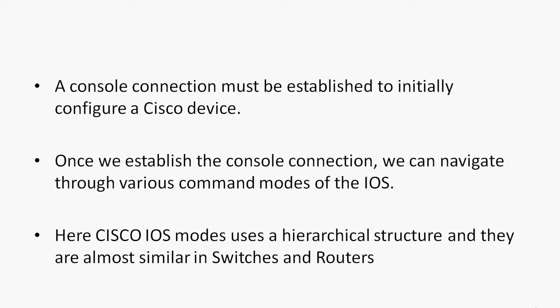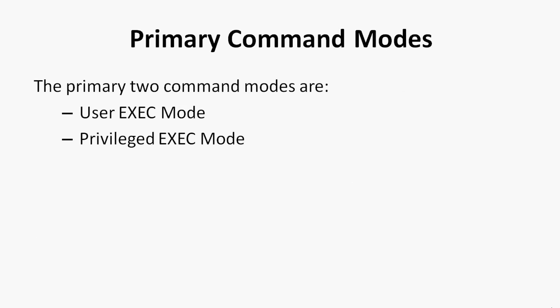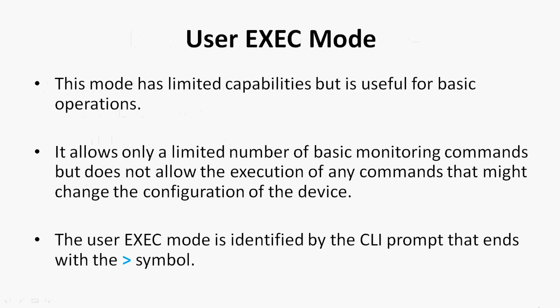Cisco IOS modes use a hierarchical structure and they are almost similar in switches and routers. We will see the primary command modes. The primary two command modes are user EXEC mode and privileged EXEC mode. We will see them one by one, starting with user EXEC mode.